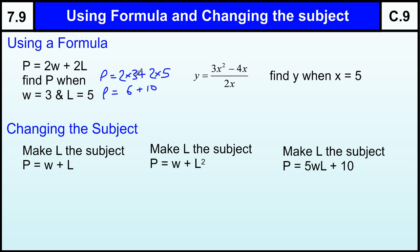Remembering we must times before we add. So we've got 2 times 3 is 6, 2 times 5 is 10. And 6 plus 10 is 16. So P equals 16. So it's just about putting the numbers in and calculating what's there.